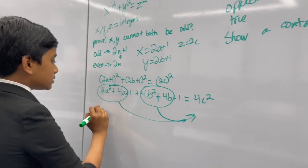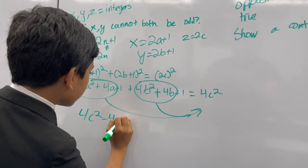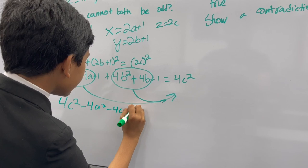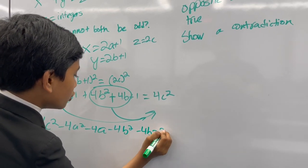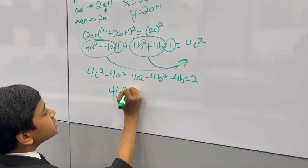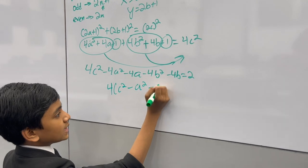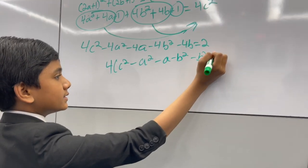That gives us 4c squared minus 4a squared minus 4a minus 4b squared minus 4b equals 2, because of 1 plus 1. Now, that means we have 4 times c squared minus a squared minus a minus b squared minus b, and this is equal to 2.